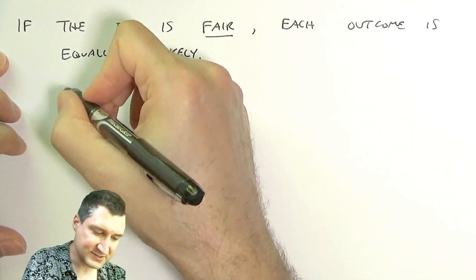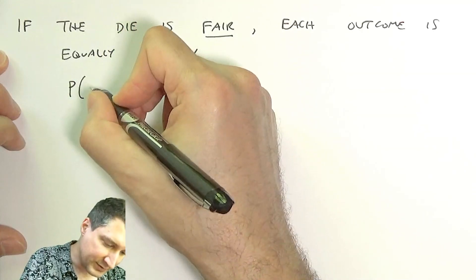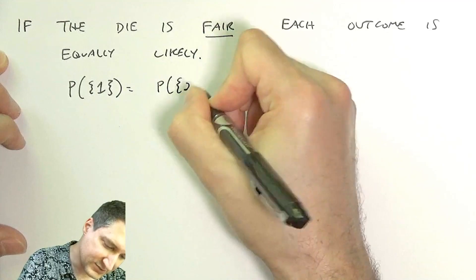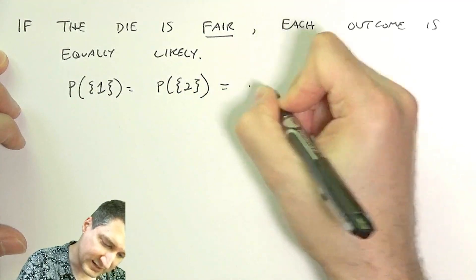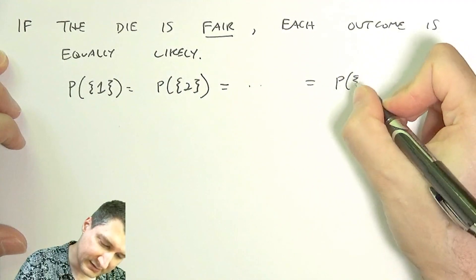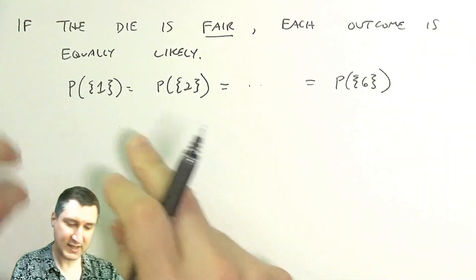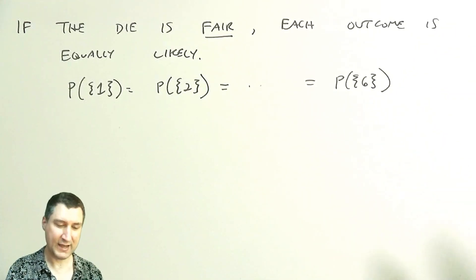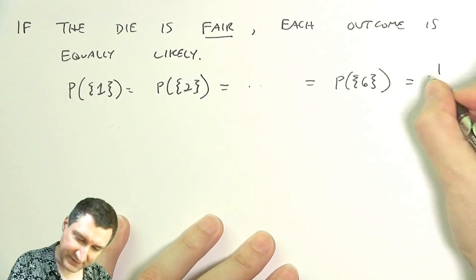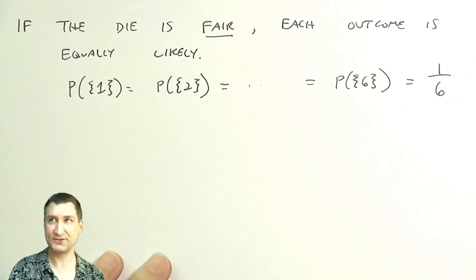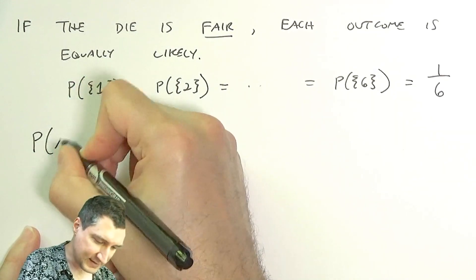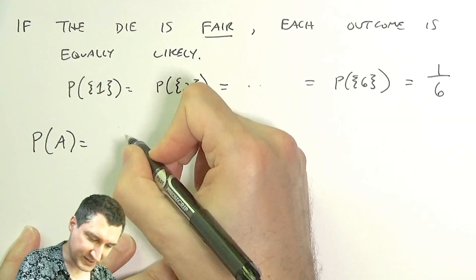What that means is the probability of getting 1 has to be equal to the probability of getting 2, all the way to the probability of getting 6. These six outcomes all have to carve up the sample space fully, and that means that the probability of each of these things has to be equal to one-sixth.